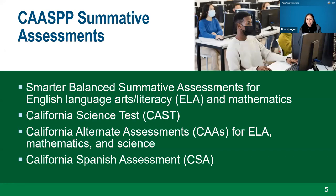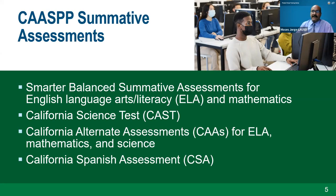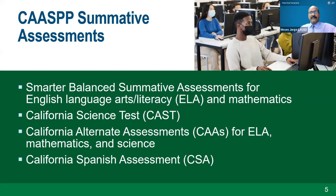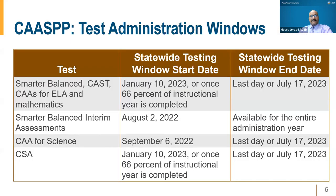Good afternoon, everyone. My name is Moses, with the Los Angeles Unified School District, and I have the honor of being one of the LEA presenters. Just some overview and quick reminders about the CAASPP system: it consists of the Smarter Balanced Summative Assessments for ELA and mathematics, the California Science Test (CAST), the California Alternate Assessments (CAAs) for ELA, mathematics, and science, and the California Spanish Assessments (CSA), which is optional. Each assessment has its own set of administration rules.